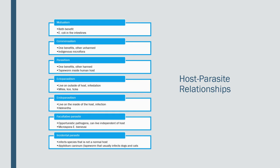Facultative parasites are opportunistic pathogens that can live independent of the host — an example is Microspora. Incidental parasites infect species that are not a normal host; an example is Dipylidium, a tapeworm that usually infects dogs and cats.